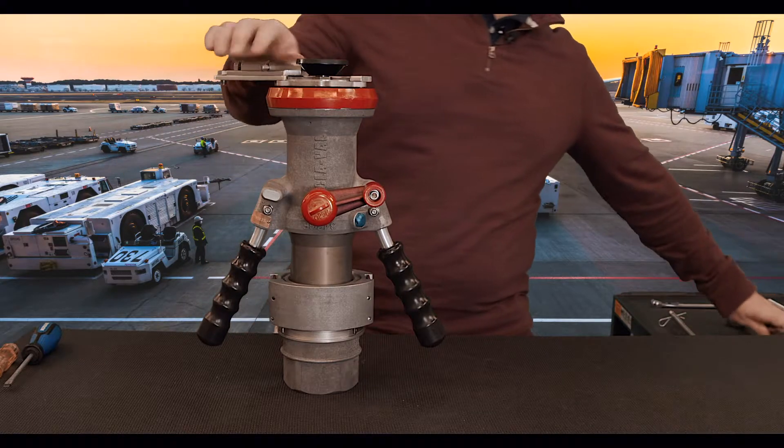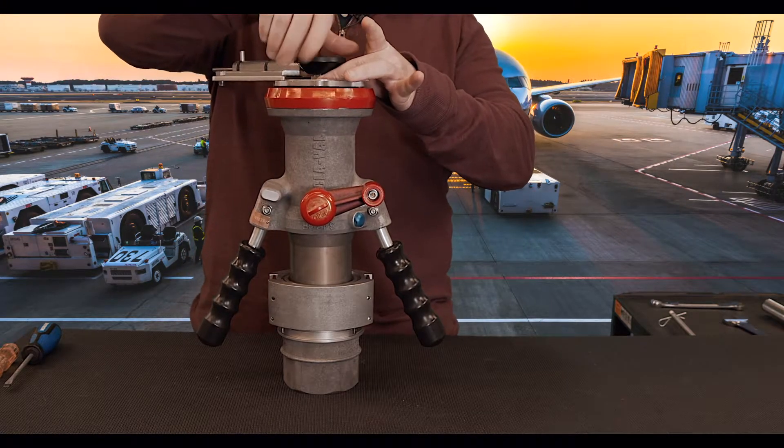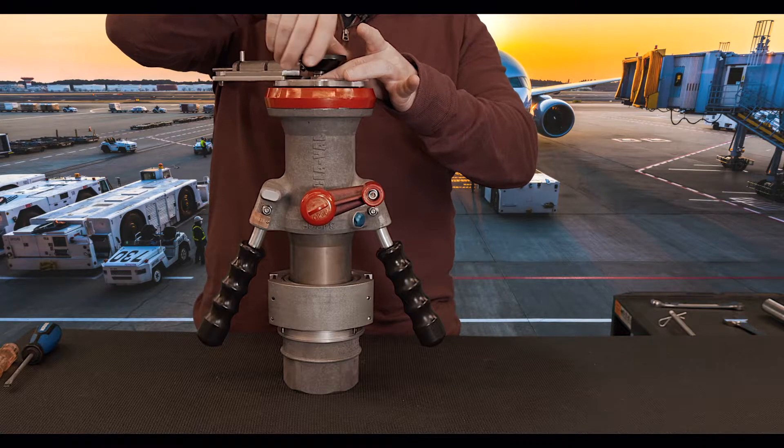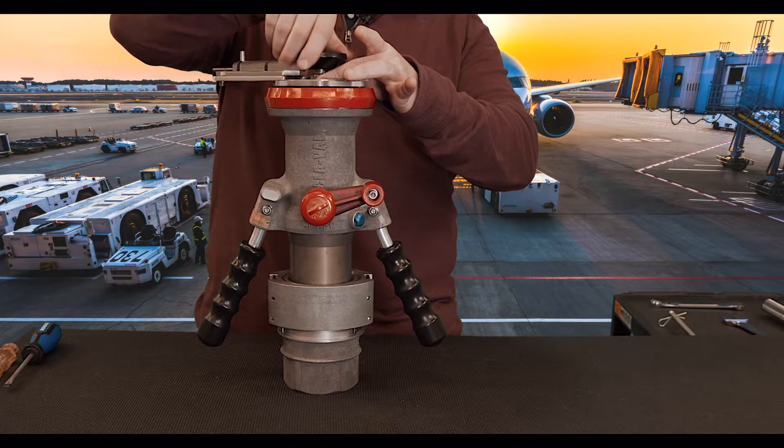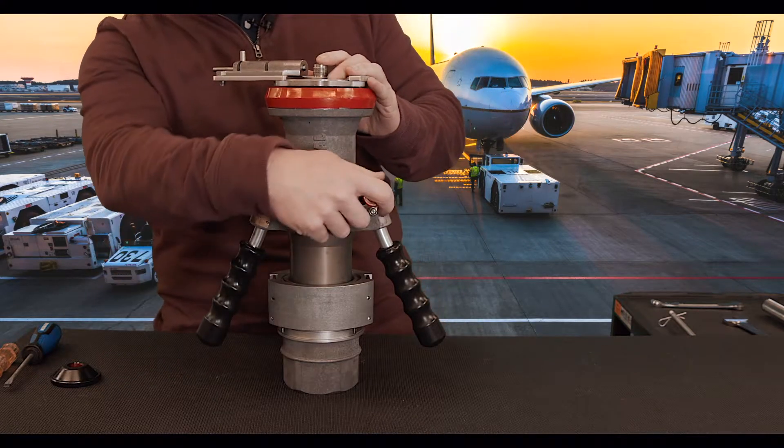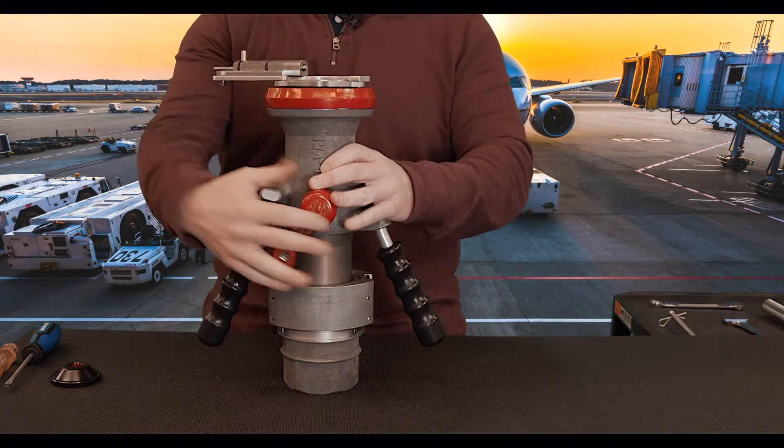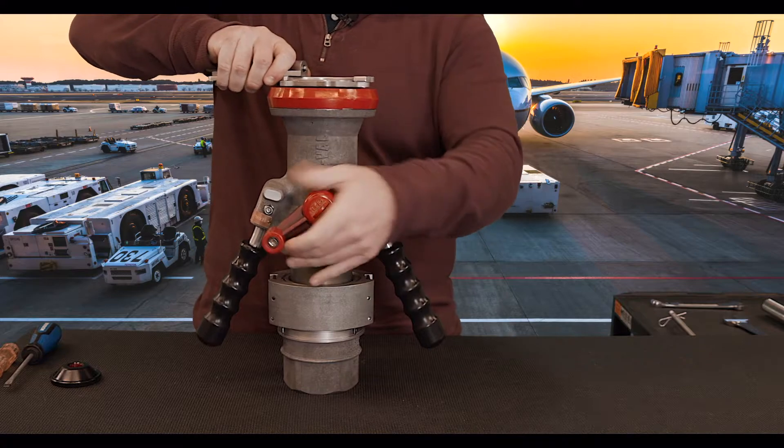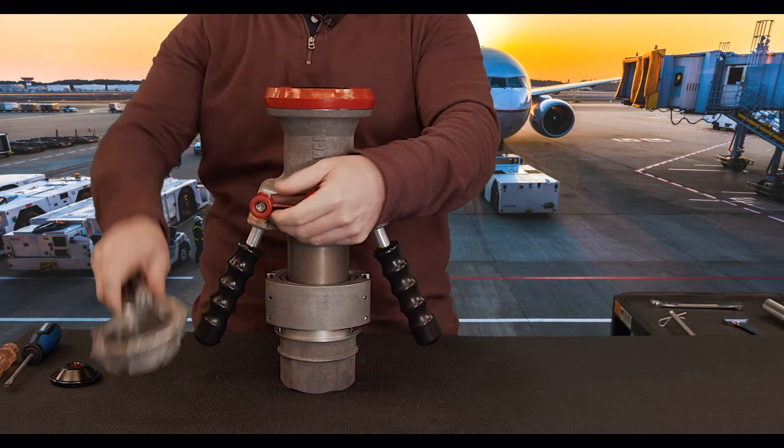Once our swivel nut is loose, we can then rotate our poppet, which is free-floating, off, set it to the side, and then we can remove our key.